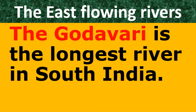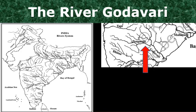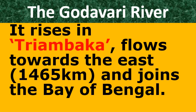The next east-flowing river is Godavari. Godavari is the longest river in South India. This Godavari rises near Triambakeshwar, near Nasik district of Maharashtra, and flows towards the east. The total length of this river is 1,465 kilometers and it joins the Bay of Bengal.